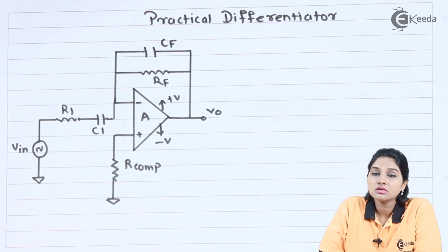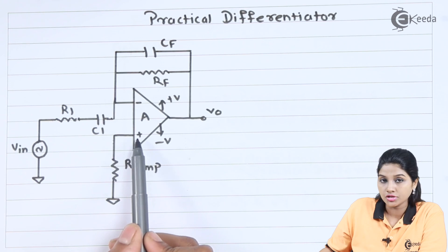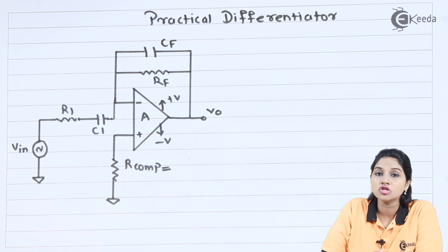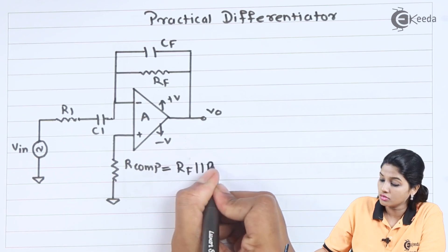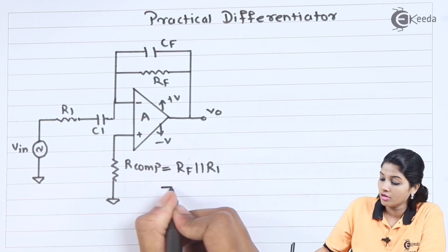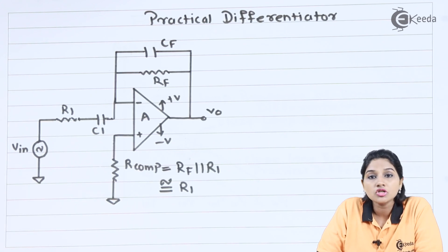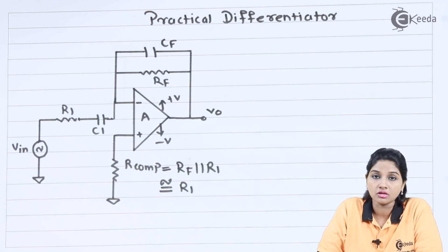If we look at the circuit diagram properly, the resistor R compound is connected to the non-inverting terminal, which is nothing but a parallel combination of Rf and R1. So we can write Rf parallel to R1, which is approximately equal to R1 only. The output equation and operation of the circuit remain the same as the basic differentiator circuit.